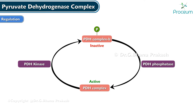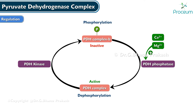Regulation of the pyruvate dehydrogenase complex is mainly an example of end-product inhibition. It is also regulated by phosphorylation and dephosphorylation. PDH is active in the dephosphorylated state while it is inactive in the phosphorylated state. PDH phosphatase, which is responsible for maintaining PDH complex in the active state, is promoted by calcium, magnesium, and mainly insulin — so insulin activates the PDH complex.